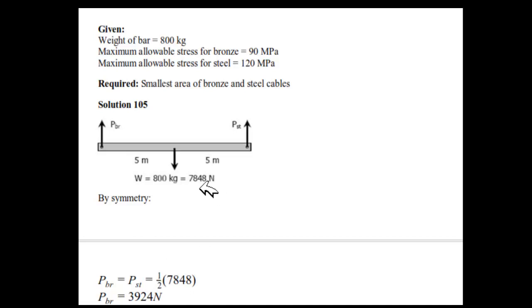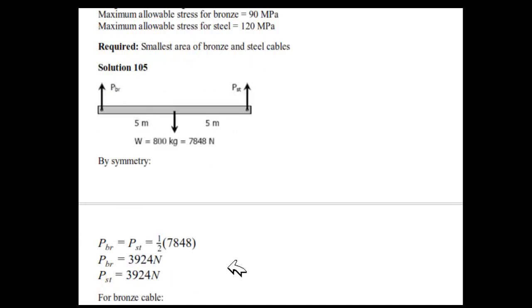Dividing this by 2, we get the reaction which equals 3924. For P steel, the answer is the same because you just need to divide by 2.